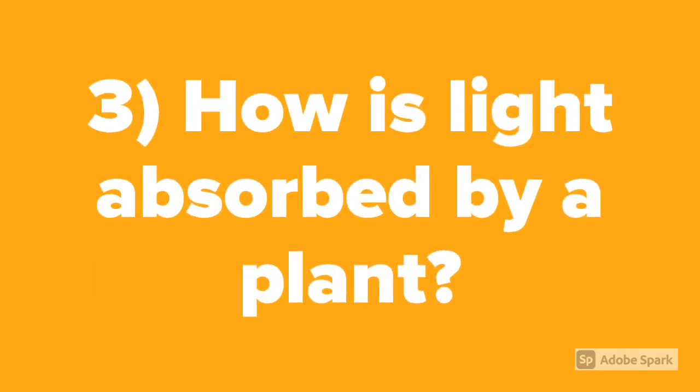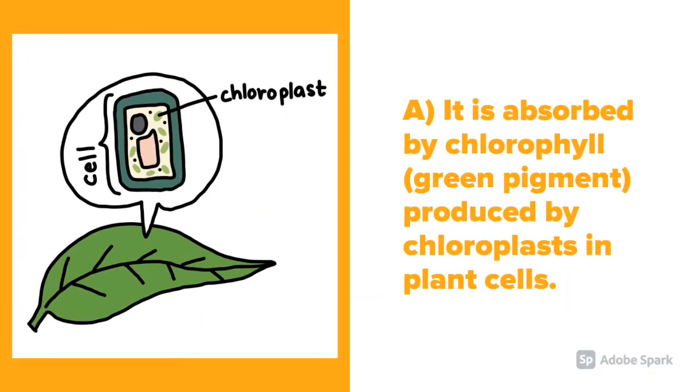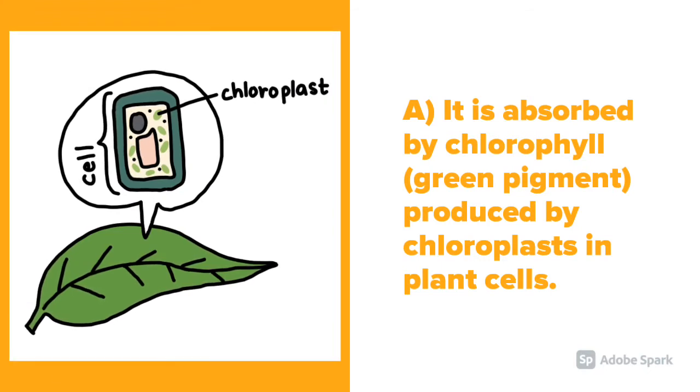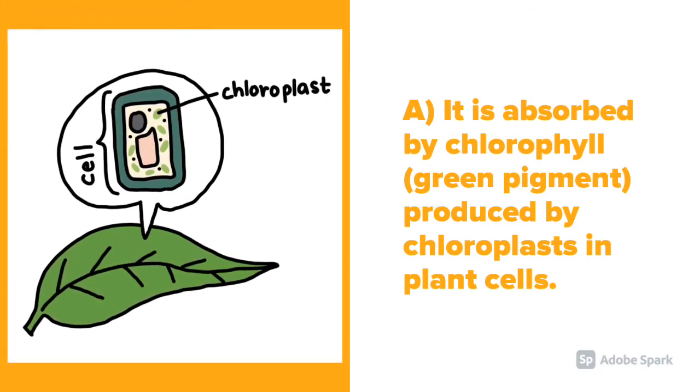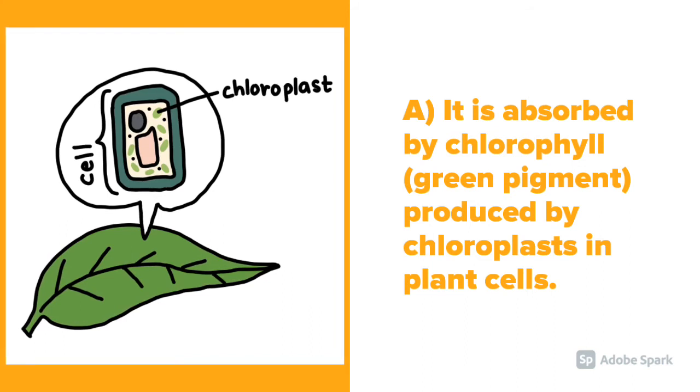Question number 3: How is light absorbed by a plant? It is absorbed by chlorophyll, a green pigment produced by chloroplasts in plant cells.